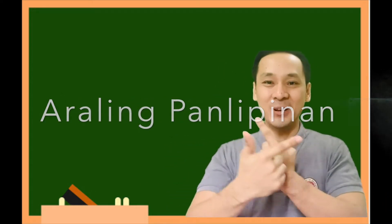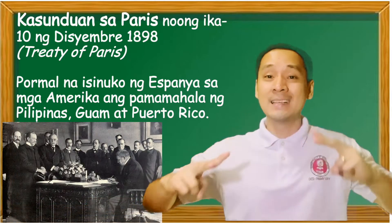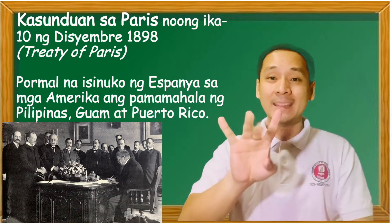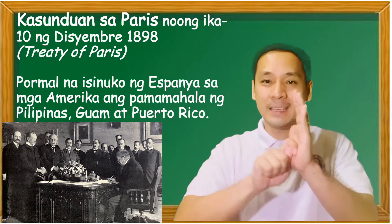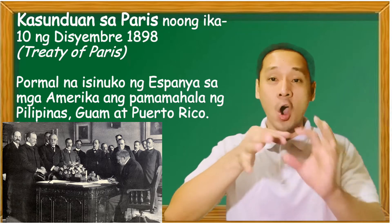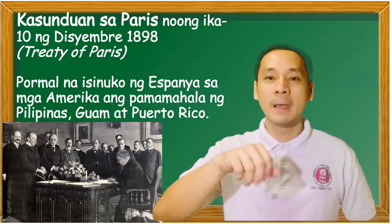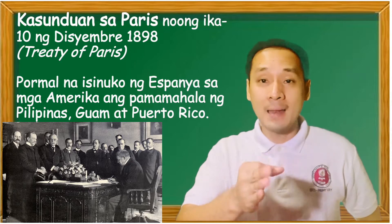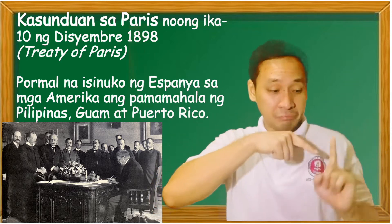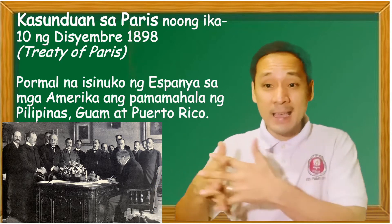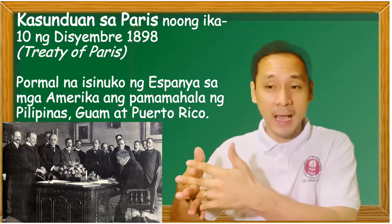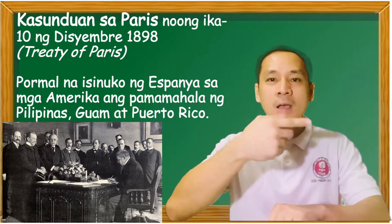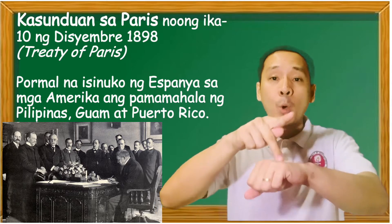Sa learning lesson, ang paksa ay noong ikasampung Desyembre 1898, ang Treaty of Paris. Formal na isinuko ng Espanya sa Estados Unidos o Amerika ang pamahala ng Pilipinas, Guam at Puerto Rico.